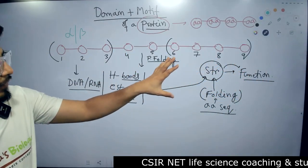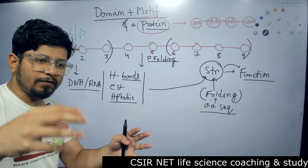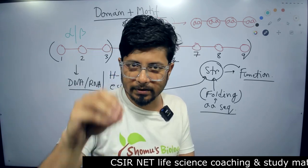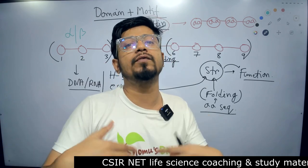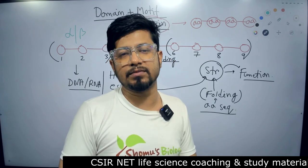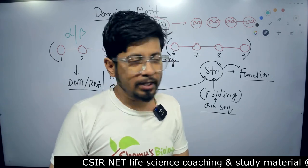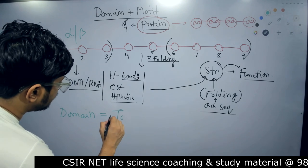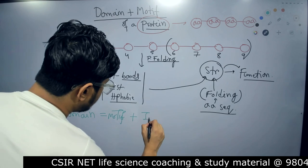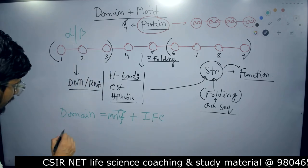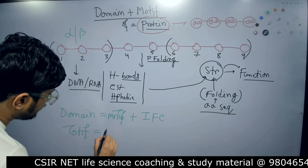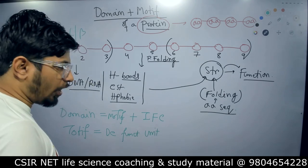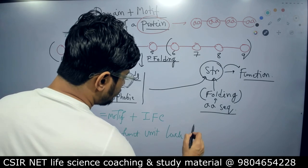On the other hand, if stretches of amino acids stick together to become a functional unit providing some purpose to the protein, and they are also indigenously able to fold themselves, then we call them domains. A domain consists of everything that a motif has, plus indigenous folding capabilities, while a motif is a discrete functional unit of a protein lacking folding capabilities.